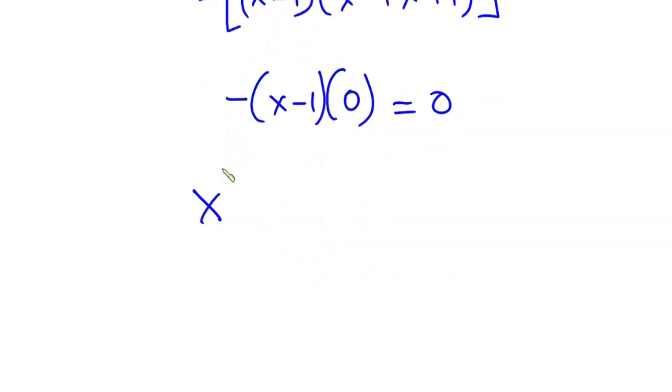So we can conclude that x to the fifth power plus x to the fourth power plus 1 is equal to 0. And this is our final answer.